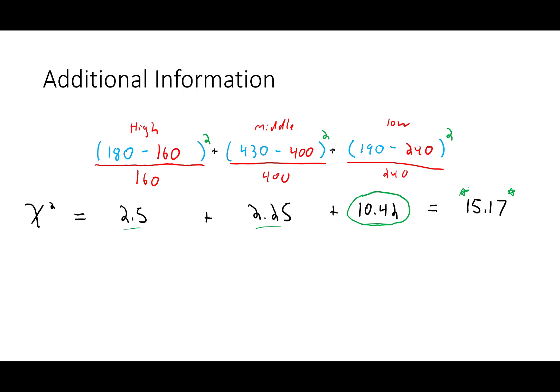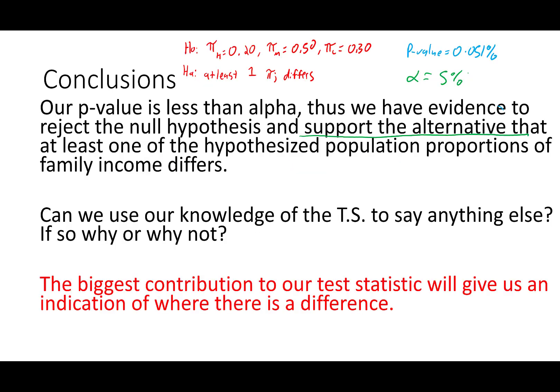The largest contributor to that test statistic was 10.42, which represents low-income families. Because this is the biggest contributor, we would have evidence that at least low-income families differs from what we expected. We hypothesized that low-income families equals 0.30, or 30%. Because it's the biggest contributor to our test statistic, and we have evidence that at least one of these proportions differs, this should be our shining star — at least one of our culprits — this low-income group. The biggest contributor gives us an indication of where there's a difference.